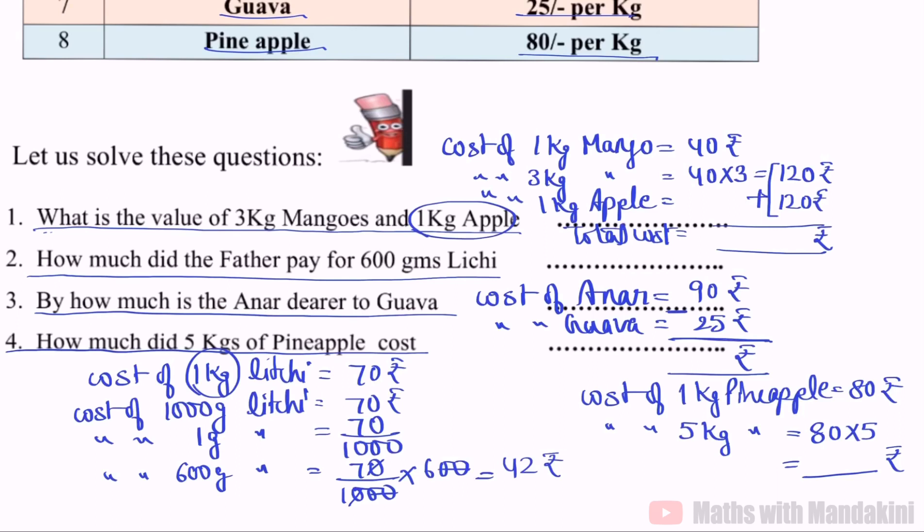After solving the worksheet, we have to do one activity. You have a rate list in the worksheet. Using this rate list, you have to make some questions. Like, what is the cost of 2 kg pomegranate? What is the total cost of 1 kg guava and 3 kg mossambi? This way you have to make questions and ask those questions to your brother or sister who are at home.